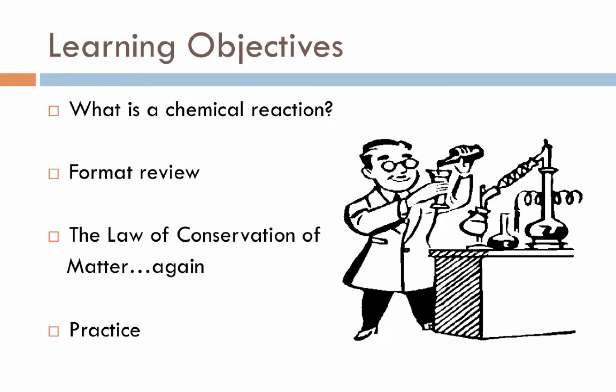To get going with this project, we'll start with a list of the learning objectives that you'll be responsible for. First of all, we'll talk about what a chemical reaction actually is. We've all heard the term before, but I think a formal definition is important. Writing reactions has a format that we as scientists agree upon. It's a format you should have seen in the past, but we'll take some time to review what that is.